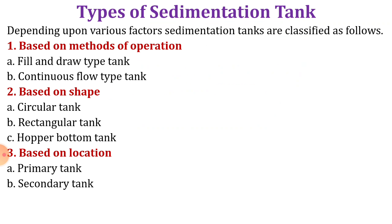Depending upon the various factors, sedimentation tanks are classified as follows. First, based on the method of operations: fill and draw type tank and the continuous flow type tank. Based on the shape, the tanks are classified as circular tank, rectangular tank, and hopper bottom type tank. And based on the location, the sedimentation tanks are classified as primary tank and secondary tank. So let us discuss each and every type in detail.